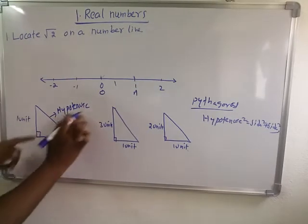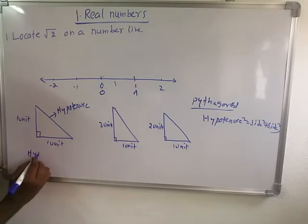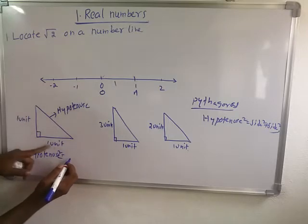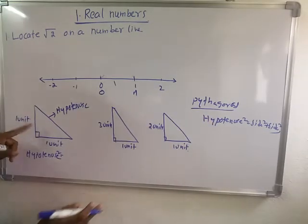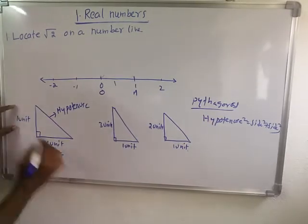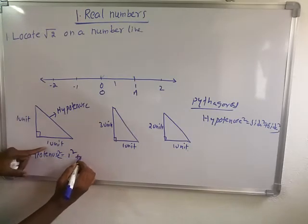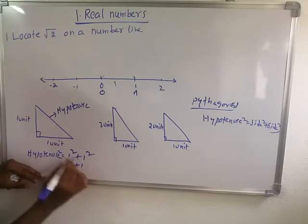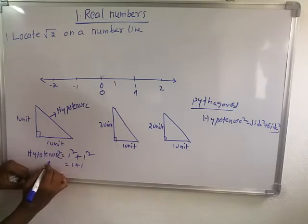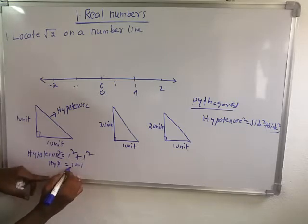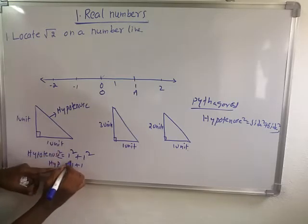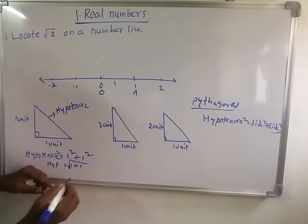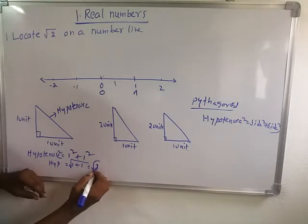Hypotenuse squared is equal to side squared plus side squared. This is one side — one squared — and this is another side — one squared. That is equal to one plus one. So the length of the hypotenuse equals the square root of one plus one, which is the square root of two.